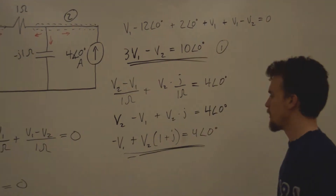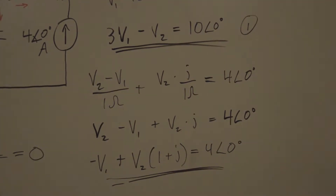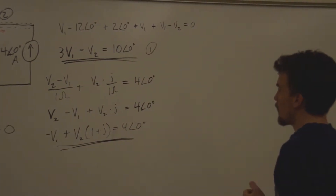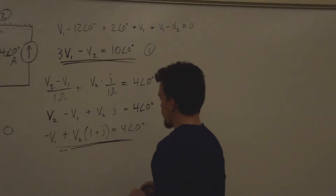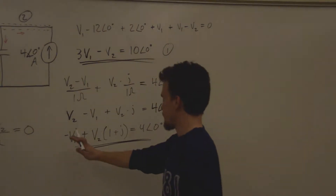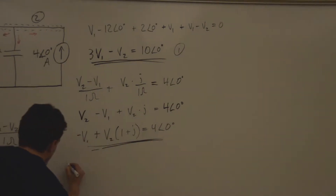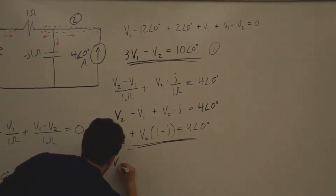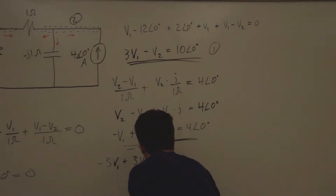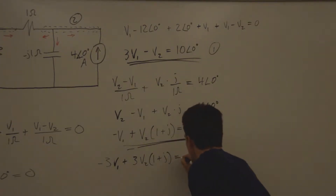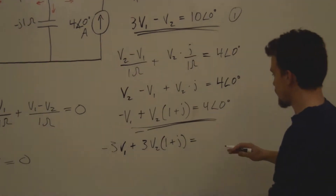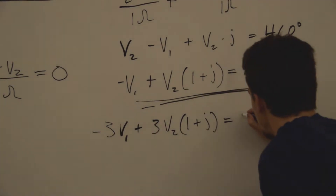Now we solve these two equations. Since we have a 3V1 term in equation one, let's multiply the second equation by 3, giving us negative 3V1 plus 3V2(1 + j) equals 12∠0°. Multiplying by 3 only affects the amplitude, so 4∠0° times 3 is just 12∠0°.